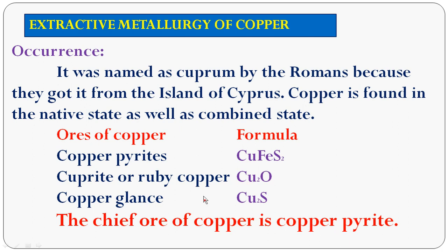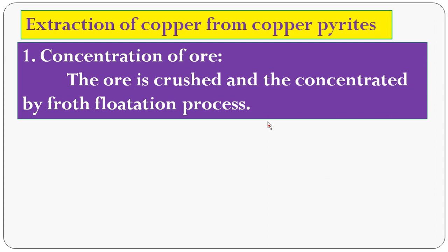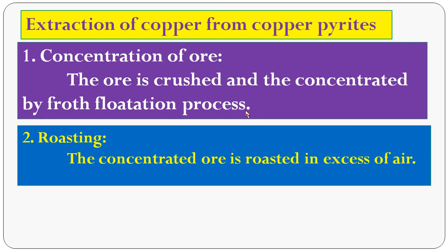The chief ore of copper is copper pyrites, formula CuFeS₂. To extract copper from copper pyrites, there are five steps. The first step is concentration of the ore. The ore is crushed and concentrated by the froth flotation process, since copper pyrites is a sulfide ore.